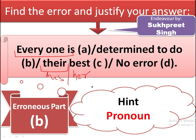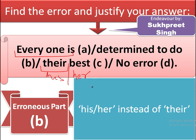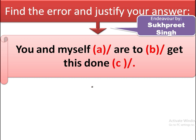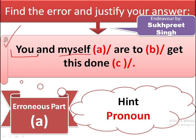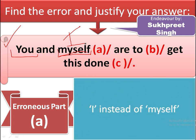Next sentence: 'You and myself are to get this done.' The error is in the pronoun, and the erroneous part is A. 'You' is a subjective pronoun, whereas 'myself' is a reflexive pronoun — not possessive, reflexive. When we are using 'you' as a subject, we are to use 'I' as subject as well, not 'myself.' The sentence goes correct when we replace 'myself' with 'I': 'You and I are to get this done,' using both 'you' and 'I' as subjects.